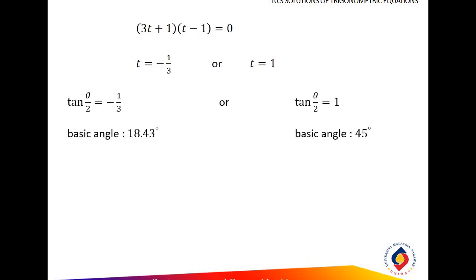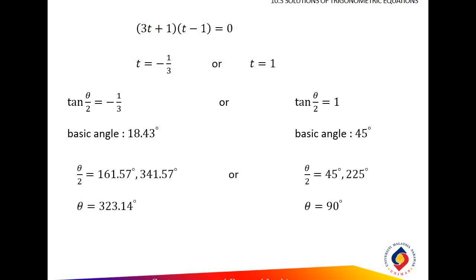Solving it, we will get the T values. Then we change the T value back to tangent of half-theta. And so we will be able to get that angle. We recall that for tangent — the tangent function.